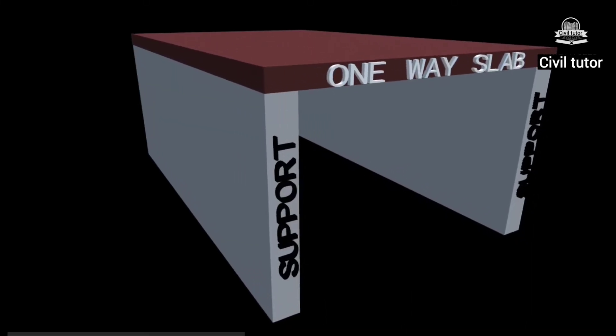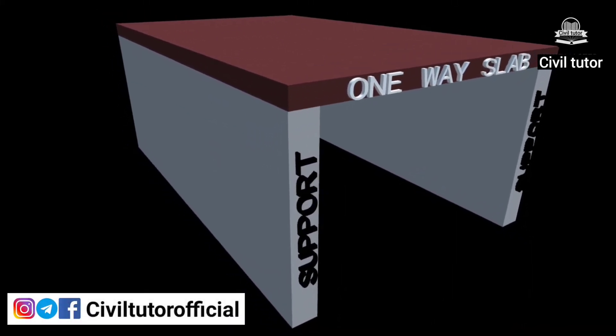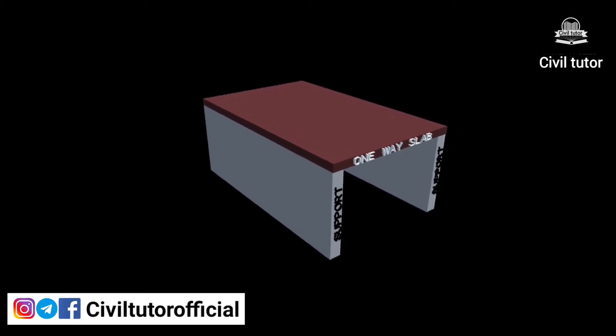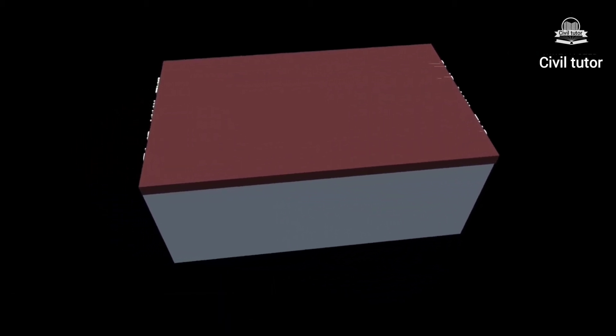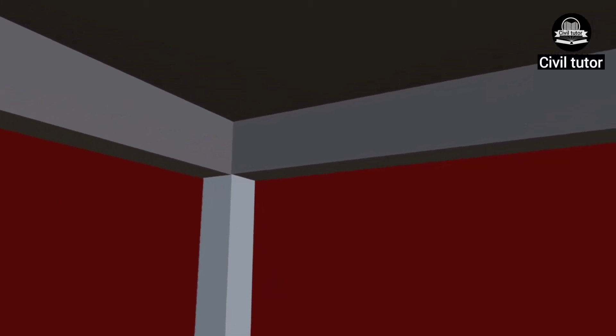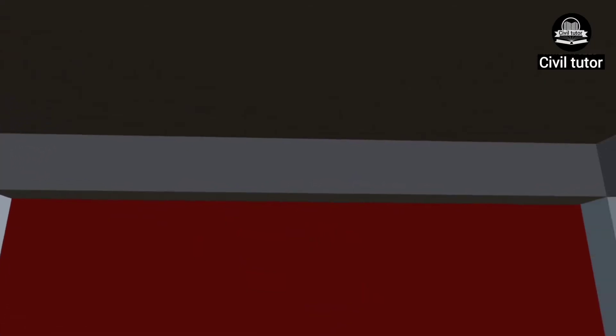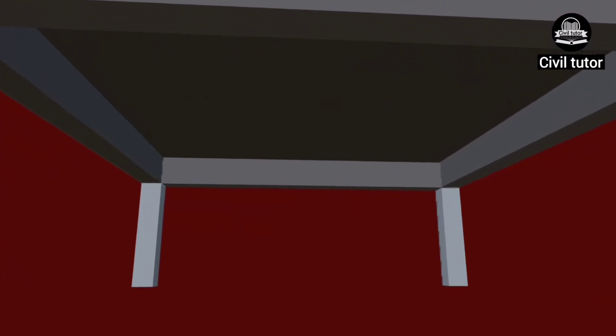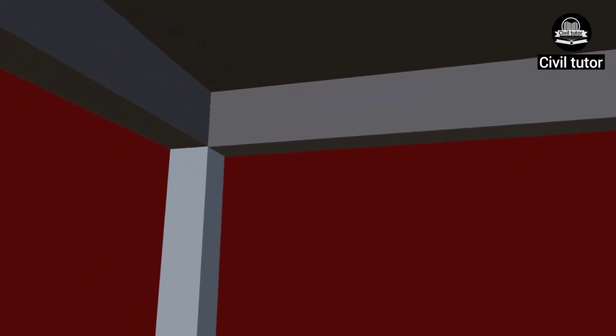A one-way slab is supported on beams on two opposite sides, and the loads are carried along the shorter span. In the case of a two-way slab, supports are provided along all dimensions, since the loads are carried along both directions. I am going to illustrate this method with an example, and at the end of this lecture, I will show you how to prepare the BBS table for a two-way slab.